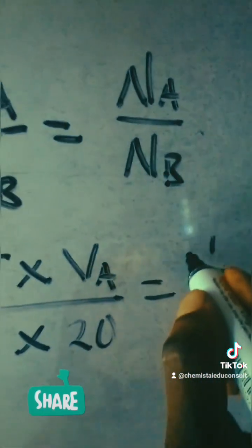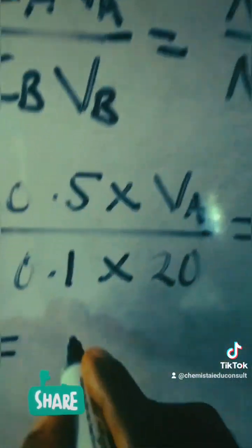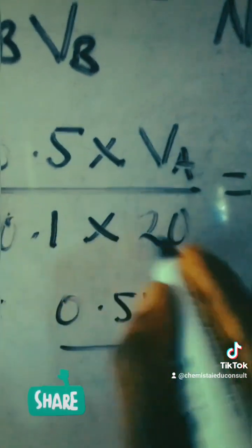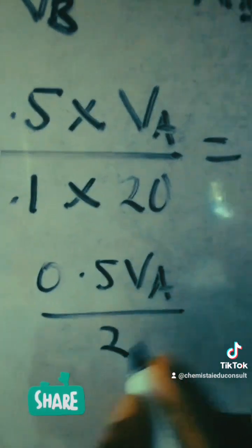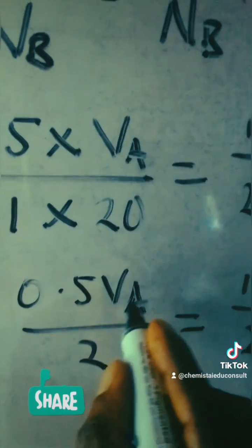When we look at this: 0.5 times VA is 0.5VA. 0.1 times 20 is 2. So we have 0.5VA over 2 equals 1 over 2. Then 0.5VA times 2...